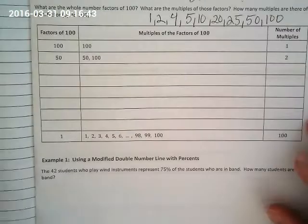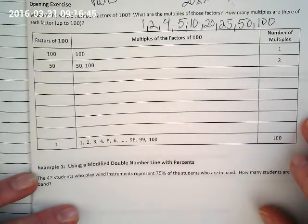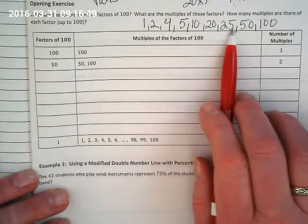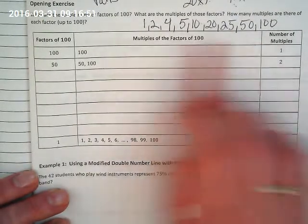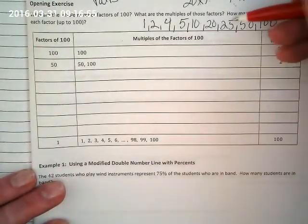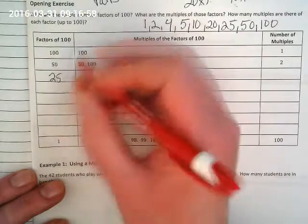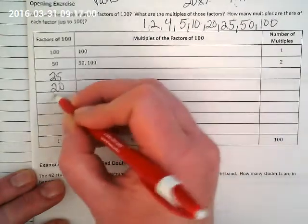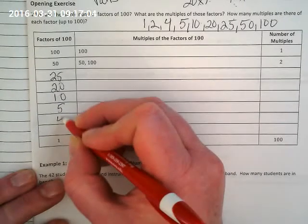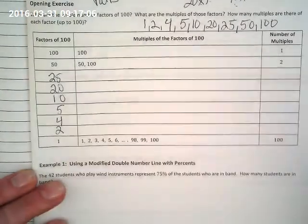We're going to use those numbers in this table. They've already listed the top two. Let's go down and we're going to go from the greatest to least on the table. So we have 150, then comes what? 25, 20, 10, 5, 4, 2, and 1.